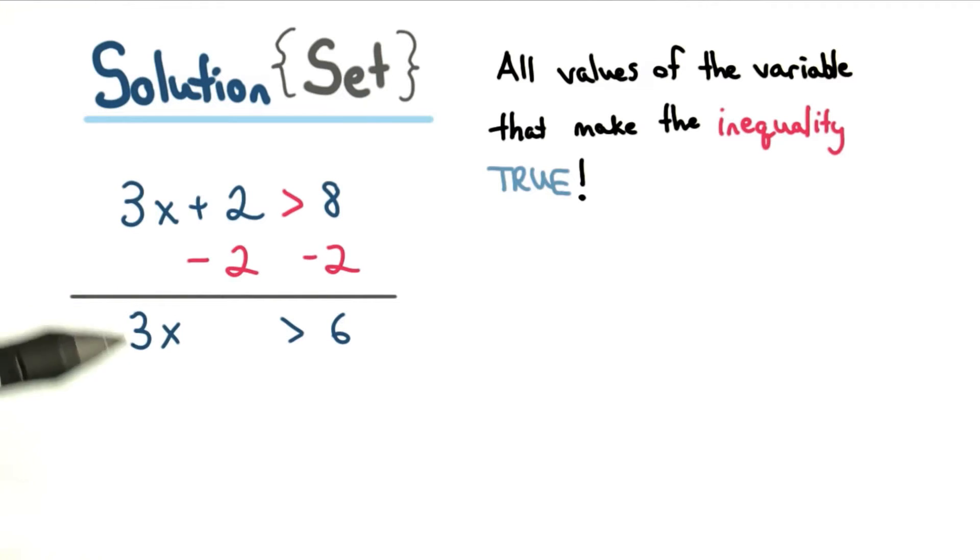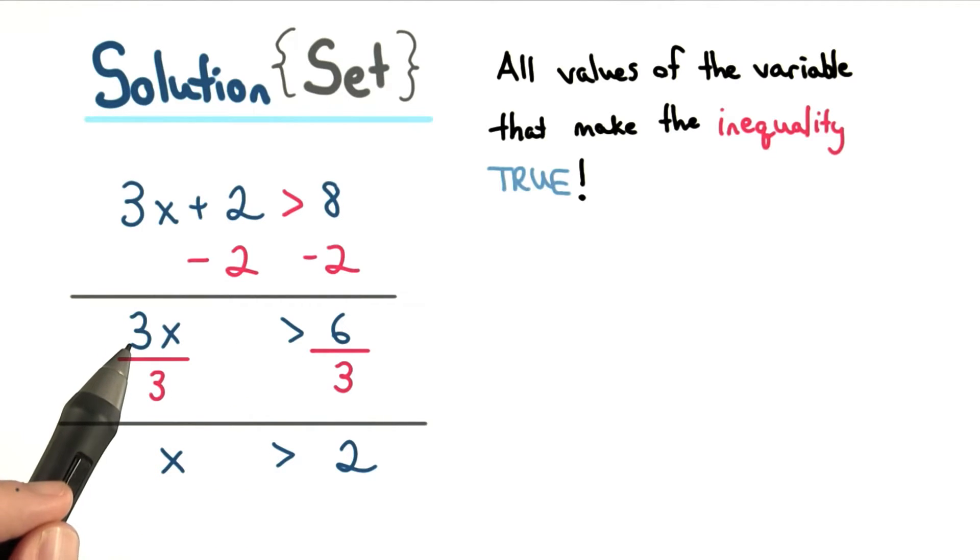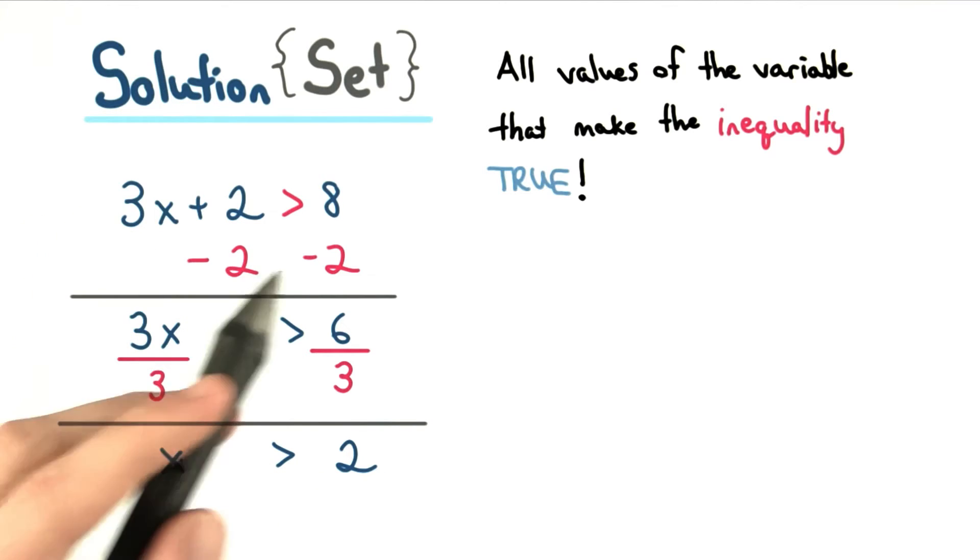We subtract 2 from both sides to get 3x is greater than 6. Then we divide both sides by the coefficient in front of the variable. We divide by 3. And the answer is x is greater than 2. So any number larger than 2 will make this inequality true.